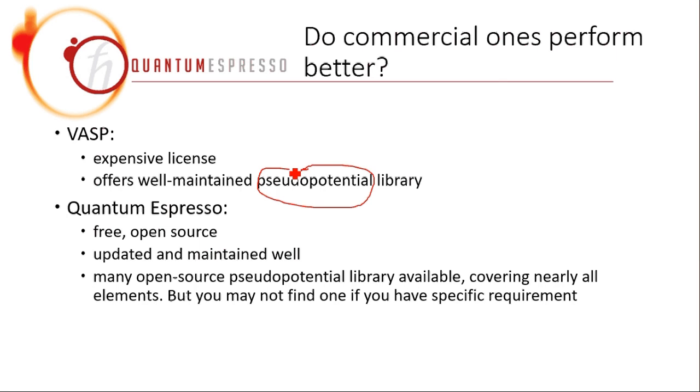And VASP, it updates the pseudo-potential library quite often and is well-maintained. For Quantum Espresso, it's free, it's open source. It has a lot of open source pseudo-potential library available and also covering nearly all the elements, maybe not the last ones on the elemental table, but you will not use that usually. But if you have really specific requirements, you need some specific element with some really specific pseudo-potential or exchange coupling, you may not be able to find it in Quantum Espresso.